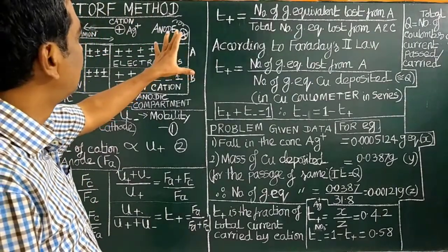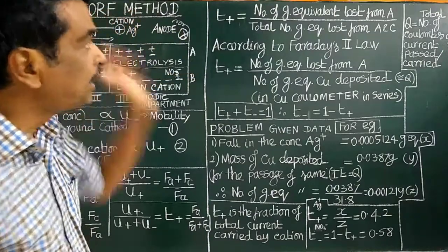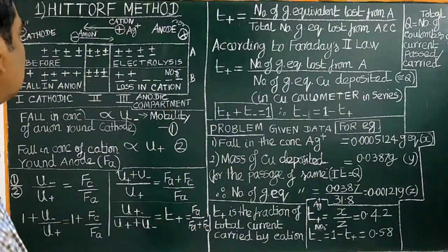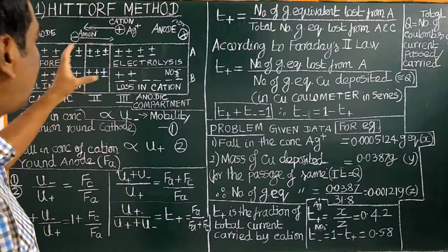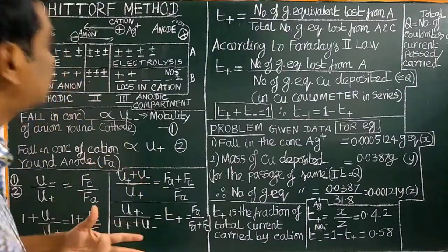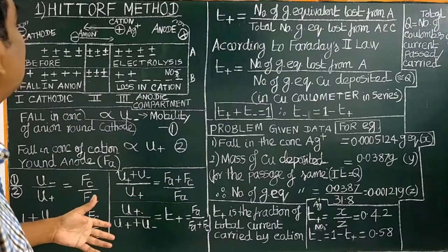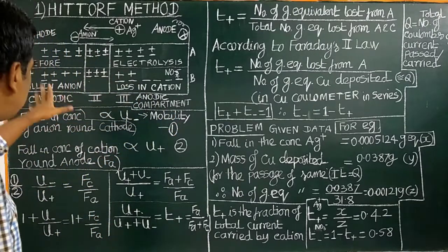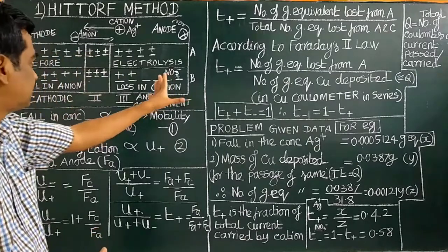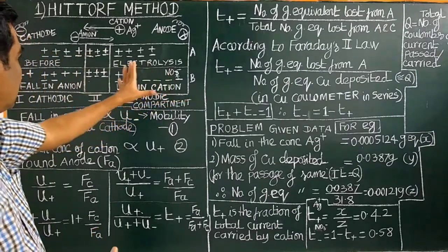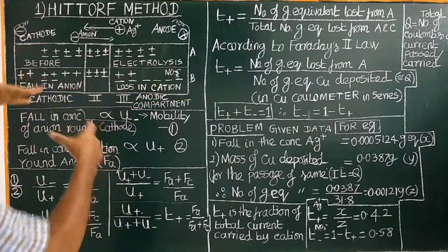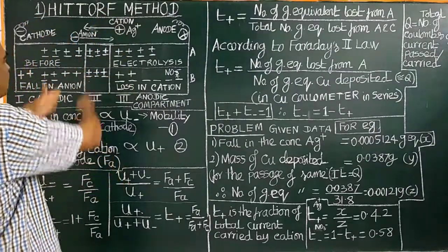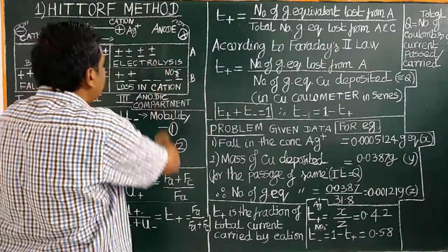Now we will look at the Hittorf method for the determination of transport number. Having already seen the experimental setup and principle, we will now examine the Hittorf theoretical device. The Hittorf electrolytic cell consists of three compartments: the cathodic compartment, the middle compartment, and the anodic compartment.